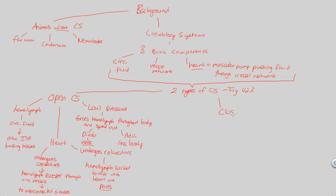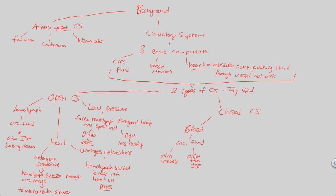A closed circulatory system is usually found in annelids, cephalopods, and vertebrates — higher order organisms. In a closed circulatory system, blood serves as the circulatory fluid, which is very different from hemolymph. Blood and ISF are two completely separate things here, unlike in an open system. Blood is the exclusive circulatory fluid, found within and moving within vessels — satisfying the vessel network requirement.